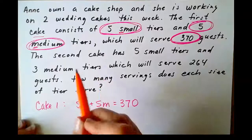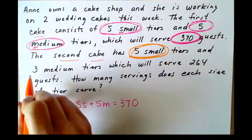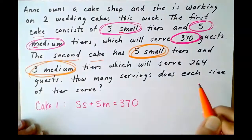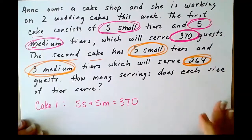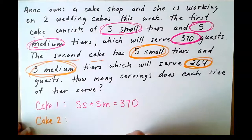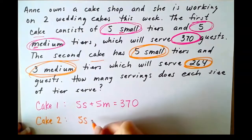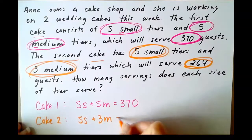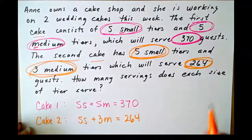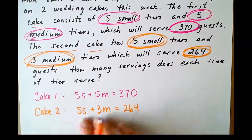Let's look at the second cake. Now we've got second cake. The second cake has 5 small and 3 medium, and it's going to serve a total of 264. This is where we get our second equation from. Cake number two, less guests, so less tiers. Still starting with 5 small, but this time only 3 medium and a total of 264. How many servings does each size of tier serve? So, we're trying to solve for S and M. S being small tiers, M being medium tiers. So, here's our system, and right away, it is completely set up to do elimination.